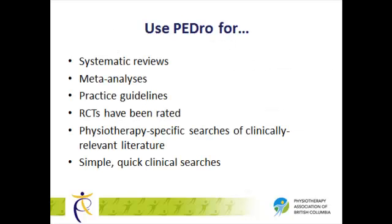You will recall that in PEDro you will only find RCTs, systematic reviews, meta-analyses, and guidelines — that is, the highest levels of research evidence. If the highest level of evidence available to you is case studies, animal research, or general narrative reviews, for example, it is best to search databases like PubMed, Medline, or CINAHL.